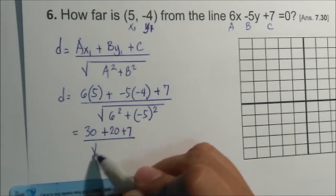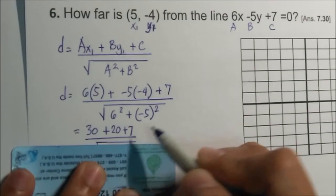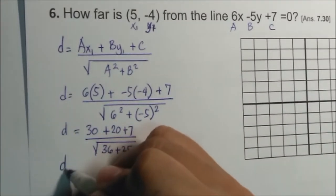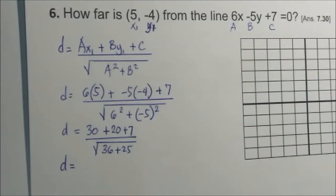Divided by square root of 36 plus 25. Let's check in the calculator.